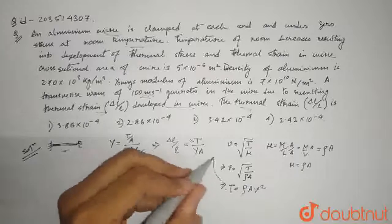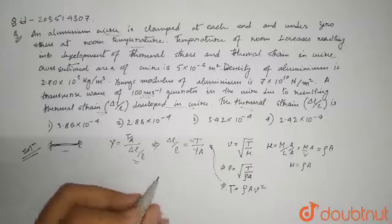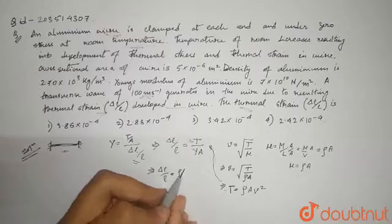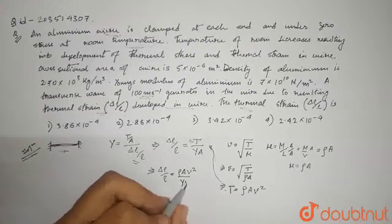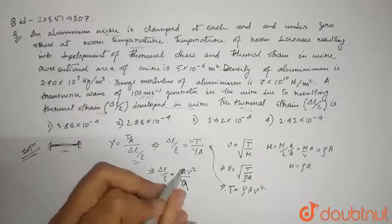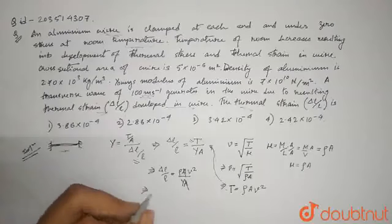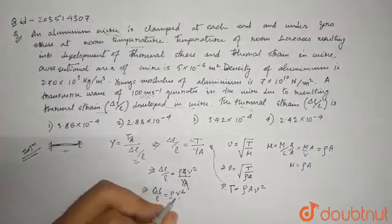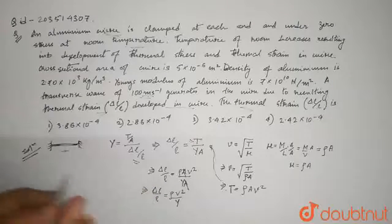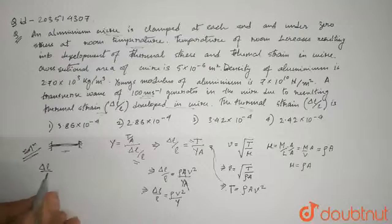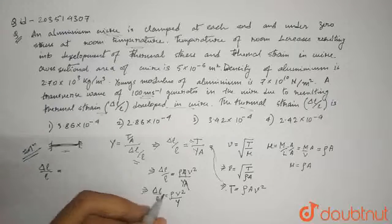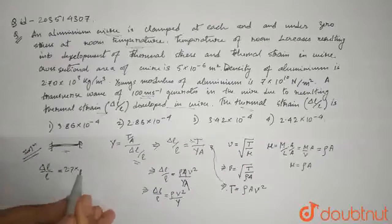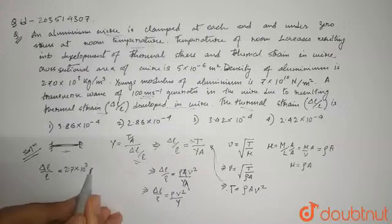Rho into A, del L by L is equal to tension over rho A, which is V square by Y. A cancels, so del L by L is equal to rho V square by Y.